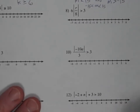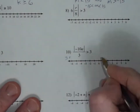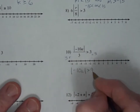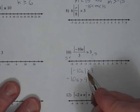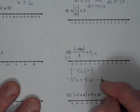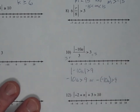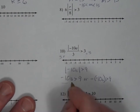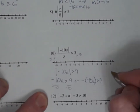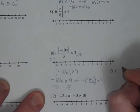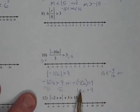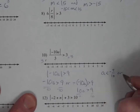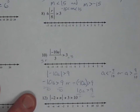Okay, numbers 10 and 11. On 10, I'll go ahead and multiply both sides by 3 to get the absolute value of negative 10a being greater than 9. So that means negative 10a is greater than 9 — the greater than is an or. The other option is the negative of that is greater than 9. Divide by negative 10: a with the flipped inequality is less than negative 9 tenths.